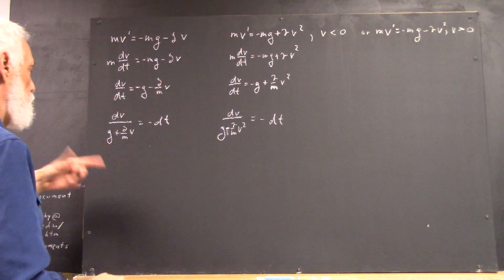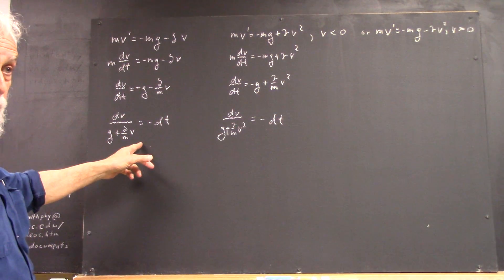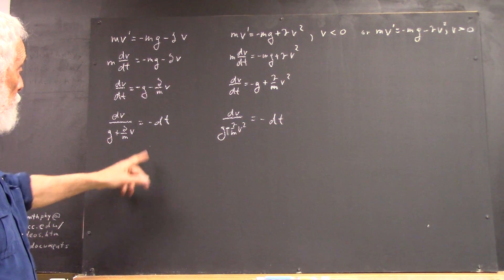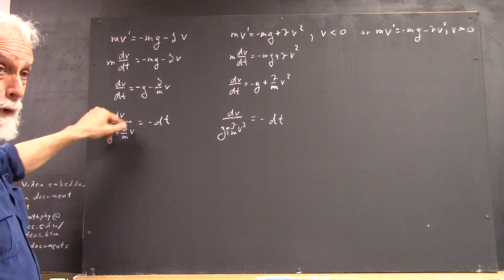Okay, to integrate this, you're going to do a U substitution. U will equal this. So the DU is going to be delta over MDV, so the DV is M over delta DU.